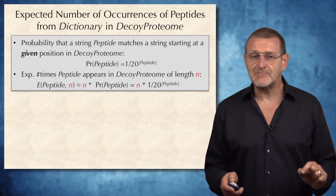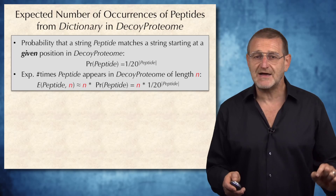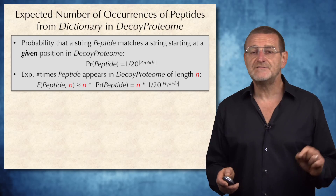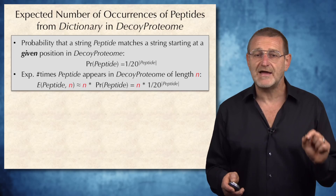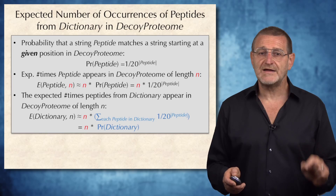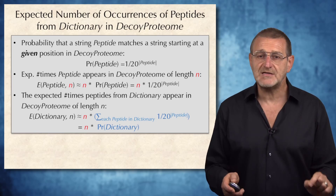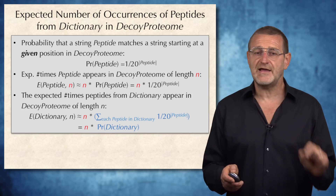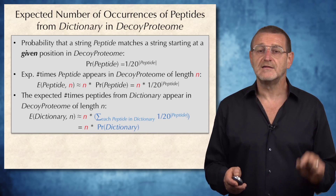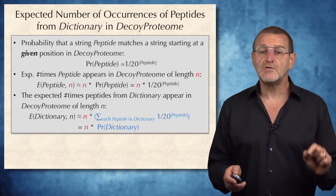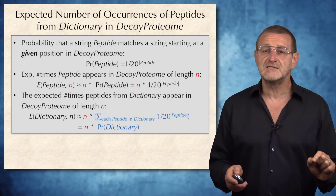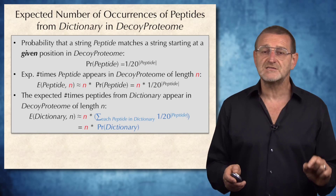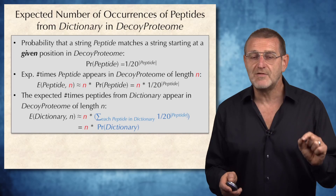Now let's estimate the expected number of times a peptide appears in a decoy protein of length n. To compute this number — expectation of peptide n — we simply need to multiply the probability of the peptide by n. Our goal is to find the expected number of times peptides from a dictionary appear in a decoy proteome of length n. This number, expectation of dictionary n, is simply n multiplied by the sum through all peptides in the dictionary of the probability of each individual peptide — denoted n multiplied by probability of spectral dictionary.